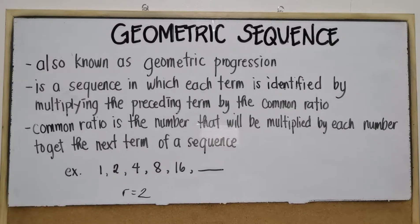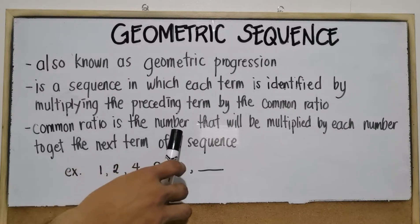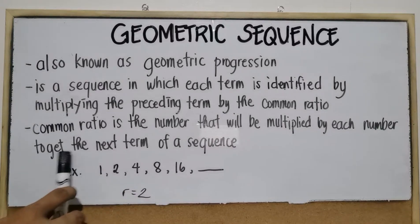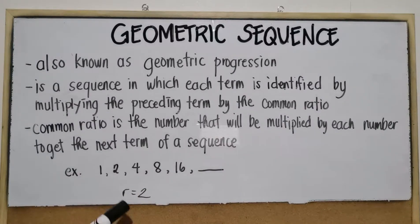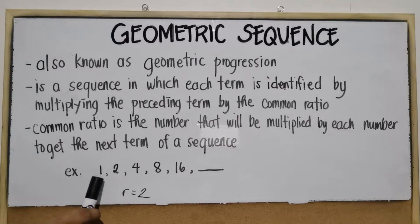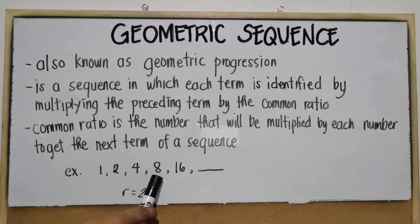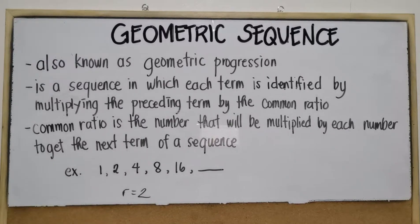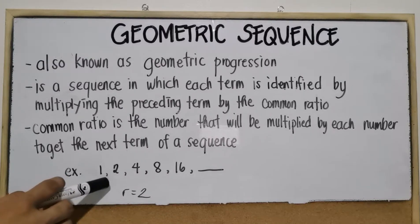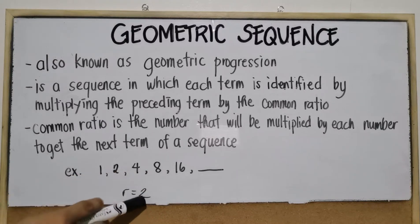Why is the common ratio 2? The common ratio is the number multiplied by each term to get the next term. What is multiplied by 1 to get 2? That is 2. What is multiplied by 2 to get 4? Still 2. What is multiplied by 4 to get 8? Still 2. What is multiplied by 8 to get 16? Still 2. So the common ratio is 2.